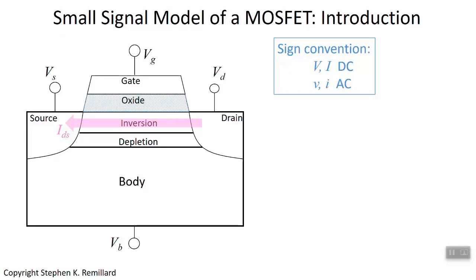We'll call it the small signal model, because it's pertinent to AC voltage as well as DC voltage, and 'signal' tends to imply AC is an option. We're pretty much going to talk about DC for now because it handles most of the questions we're confronted with. The notation convention is that capital V and I mean DC, and small v and i mean AC.